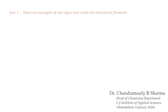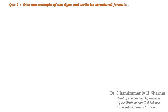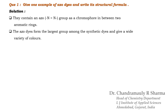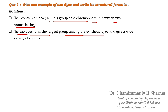Question 1 is just given on your screen: Give one example of azo dyes and write its structural formula. Before going to the answer, we will first discuss azo dyes. They contain an azo group as a chromophore in between two aromatic rings. Azo dyes form the largest group among the synthetic dyes and give a wide variety of colors.